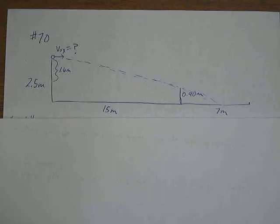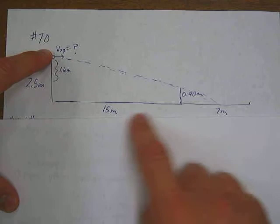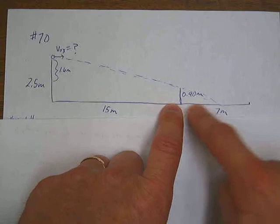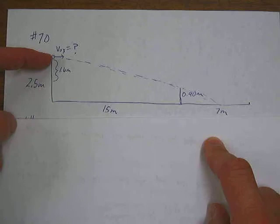So you've got this serve that's happening from 2.5 meters above the court. There's a net 15 meters away that is 0.9 meters tall, and the serve has got to be within 7 meters. It's got to hit in that first box, which is within 7 meters of the net over here.